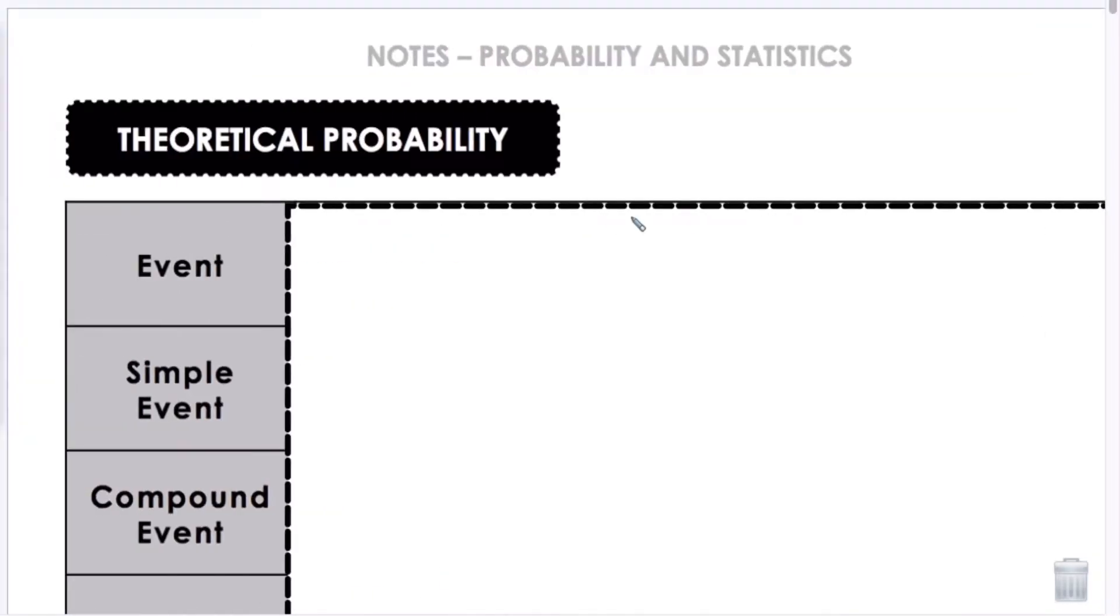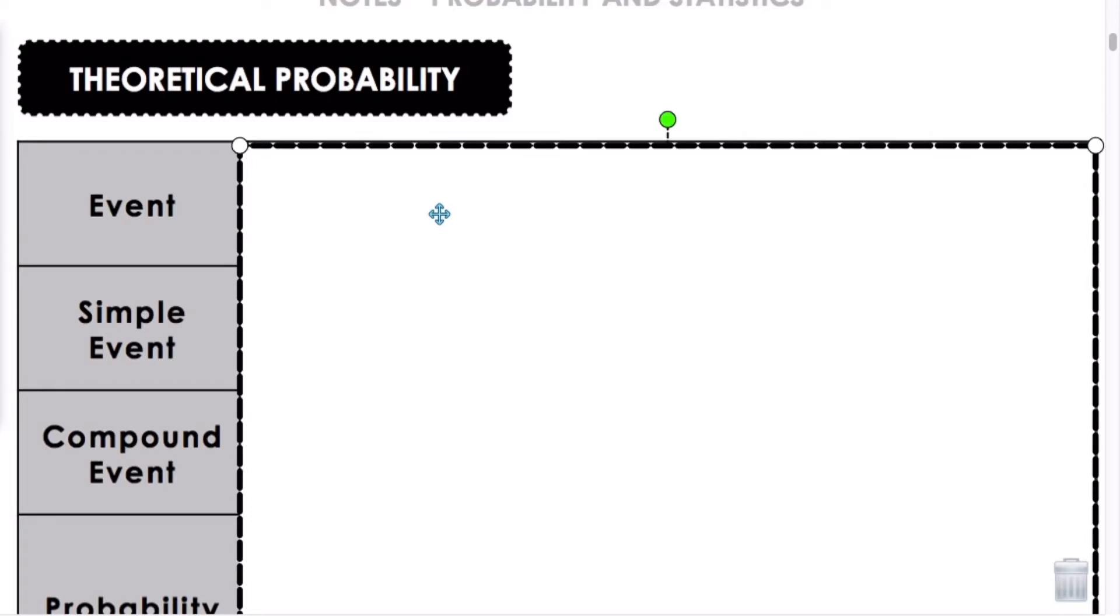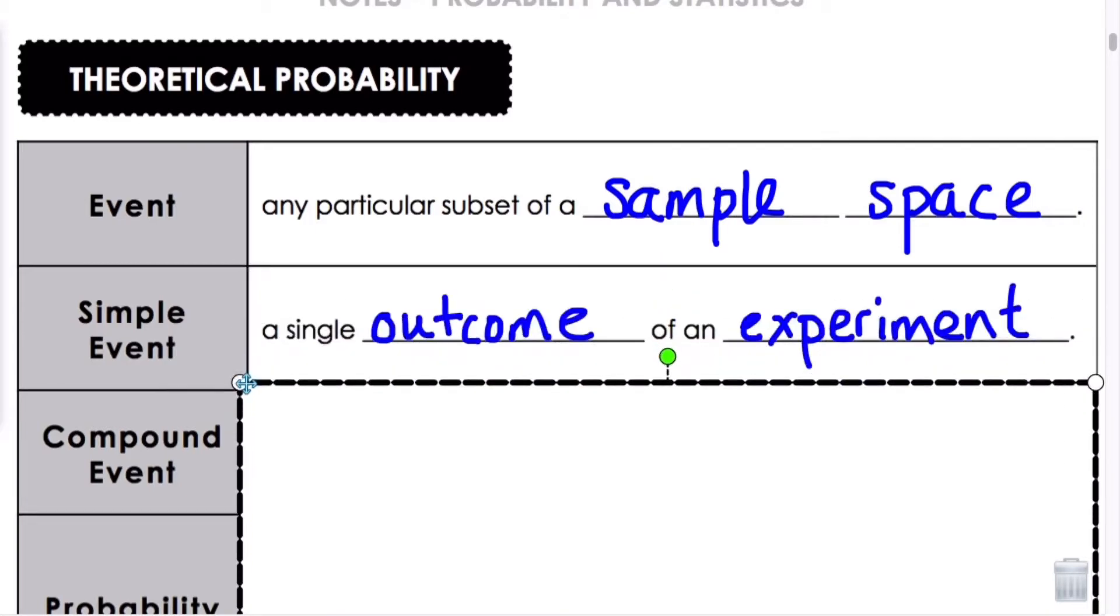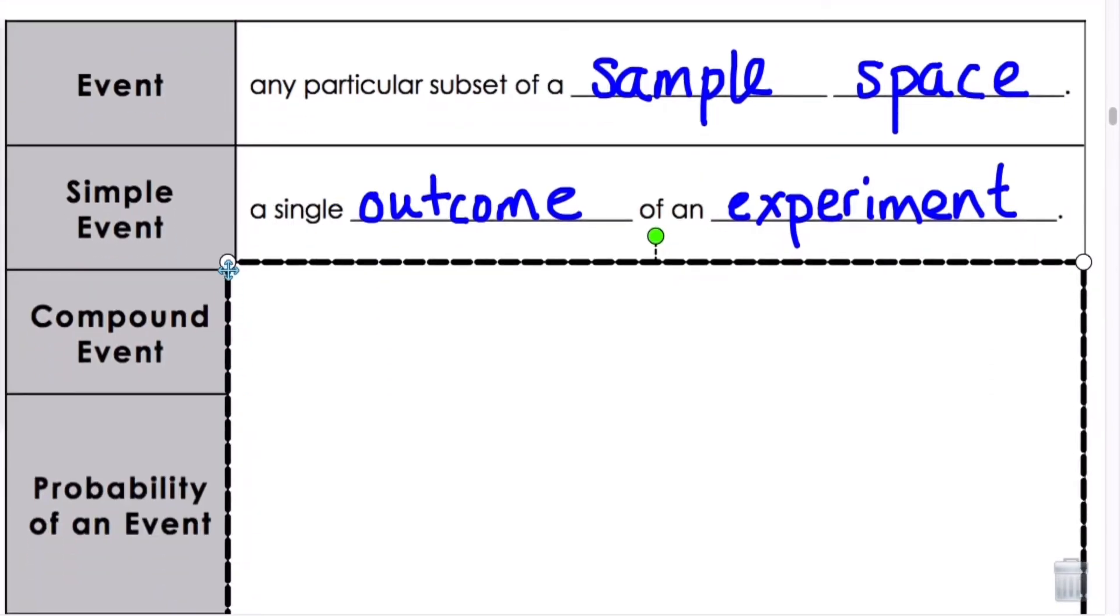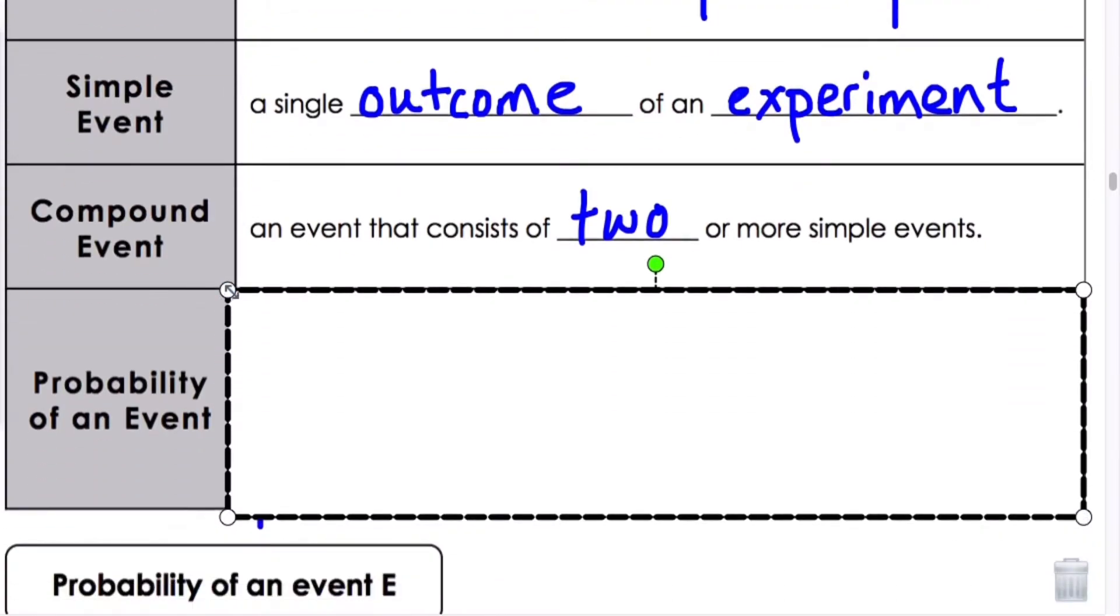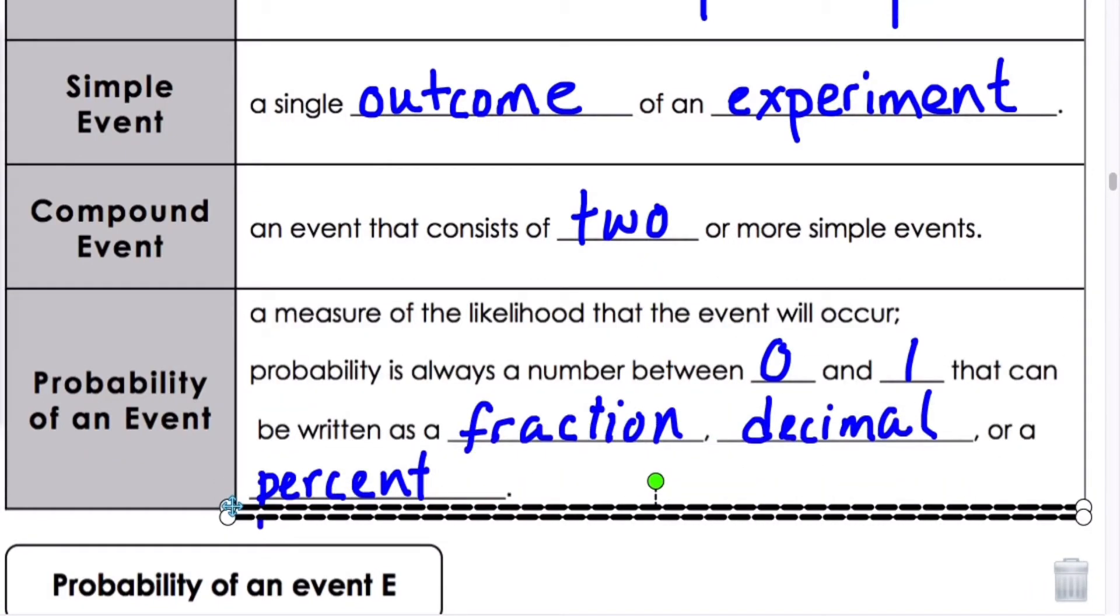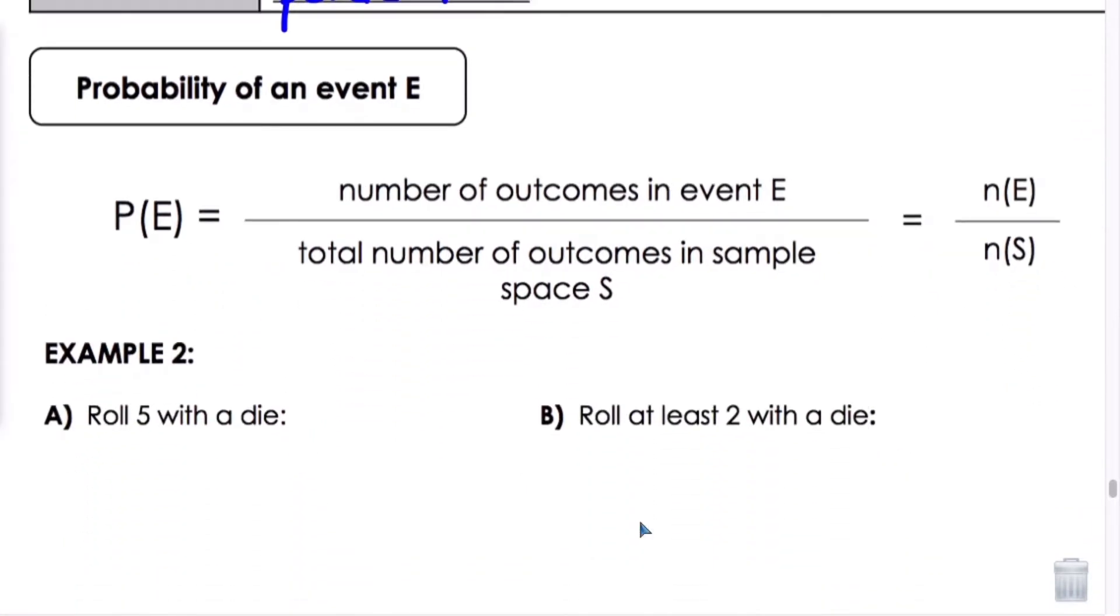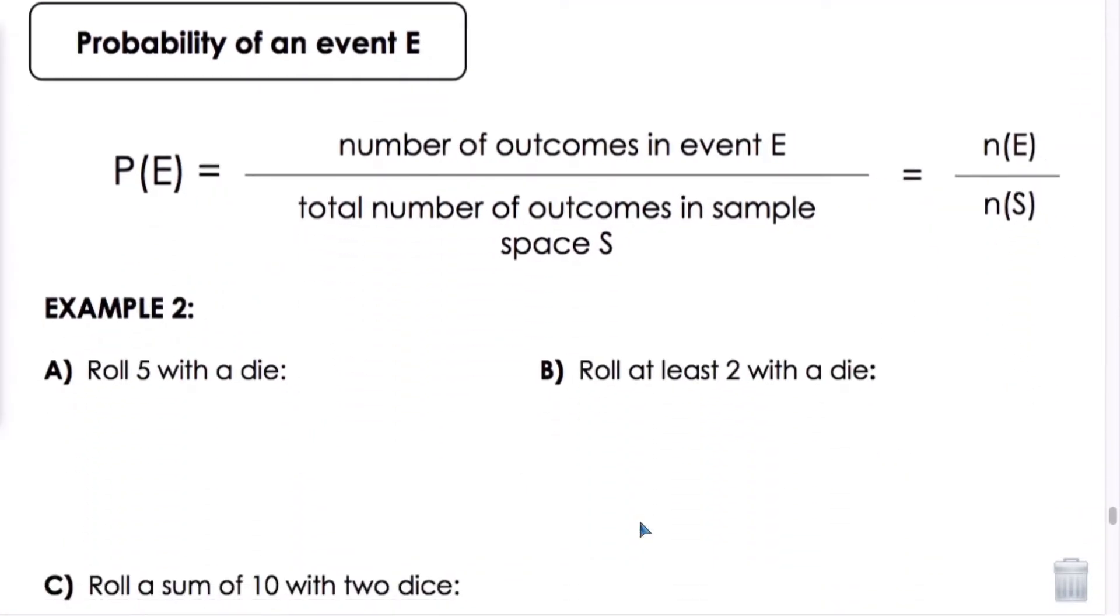Theoretical probability. What is an event? It's any particular subset of a sample space. A simple event is a single outcome of an experiment. A compound event is an event that consists of two or more simple events. The probability of an event is a measure of the likelihood that the event will occur. Probability is always a number between zero and one that can be written as a fraction, decimal, or percent. The probability of an event: the number of outcomes in the event divided by the total number of outcomes in the sample space.